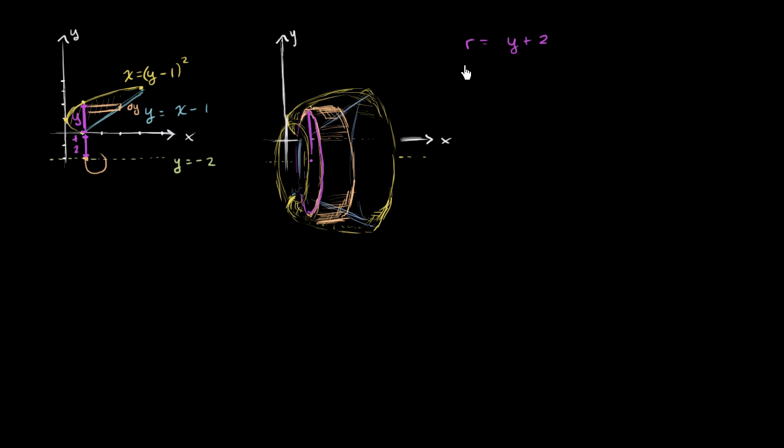If the radius is y plus 2, then we know that the circumference of that, of this circle right over here, is going to be 2 pi times that. 2 pi times y plus 2. And then the surface area, the outside surface area of the shell, the stuff out here, the outside surface area of the shell.